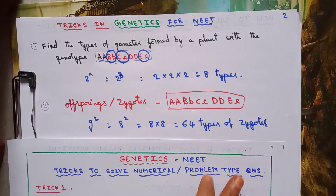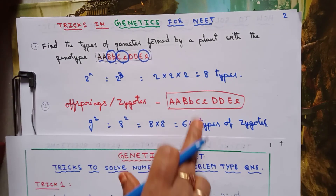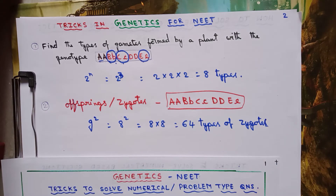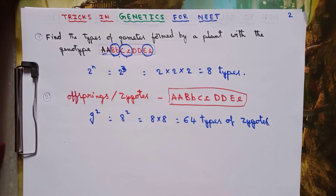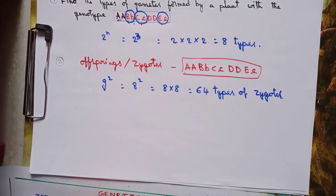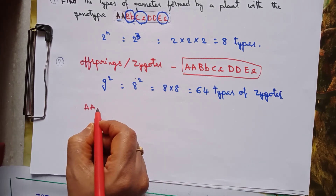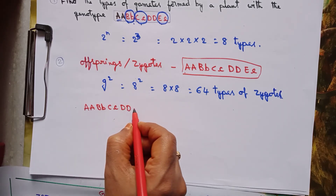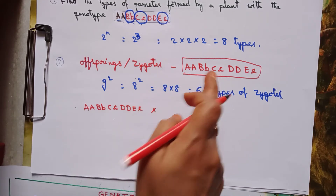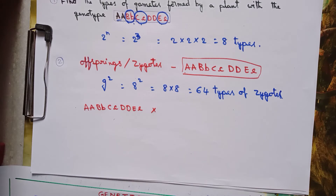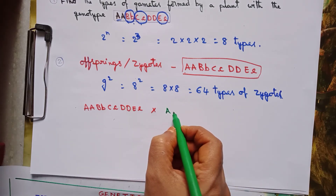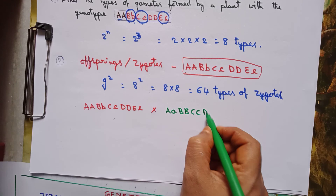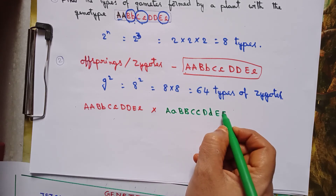In case of cross-pollination, I am taking the same plant: capital A capital A, capital B small b, capital C small c, capital D capital D, capital E small e. This plant is cross-pollinated with another plant: capital A small a, capital B capital B, capital C capital C, capital D small d, capital E capital E.